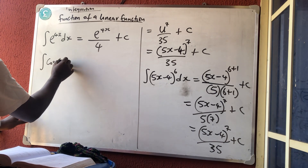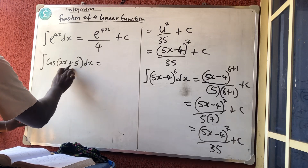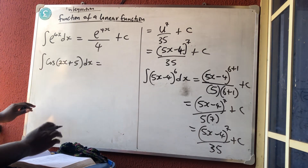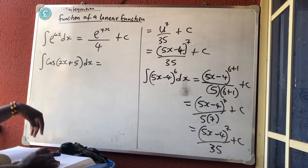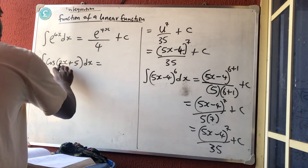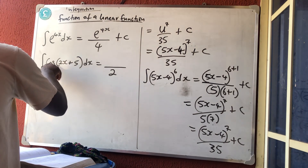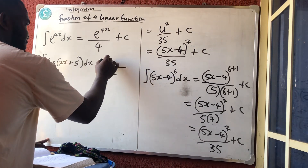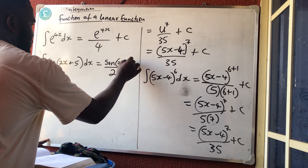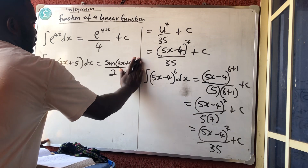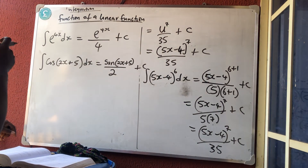Next: the integral of cos(2x + 5) dx. Look at this — it is a linear, so we apply the same rule. Differentiate the bracket: we get 2, which we keep at the denominator. The integral of cos(something) is sin(something). So the answer is sin(2x + 5) divided by 2, plus a constant.